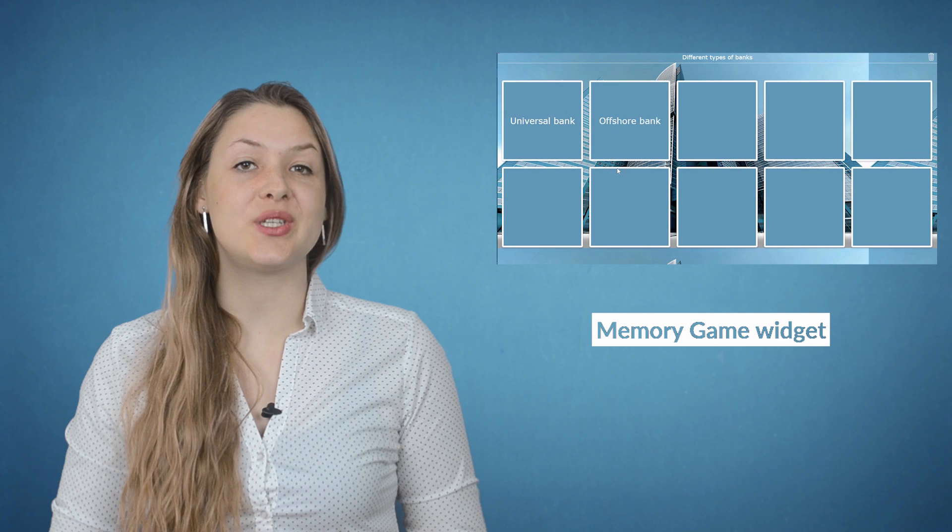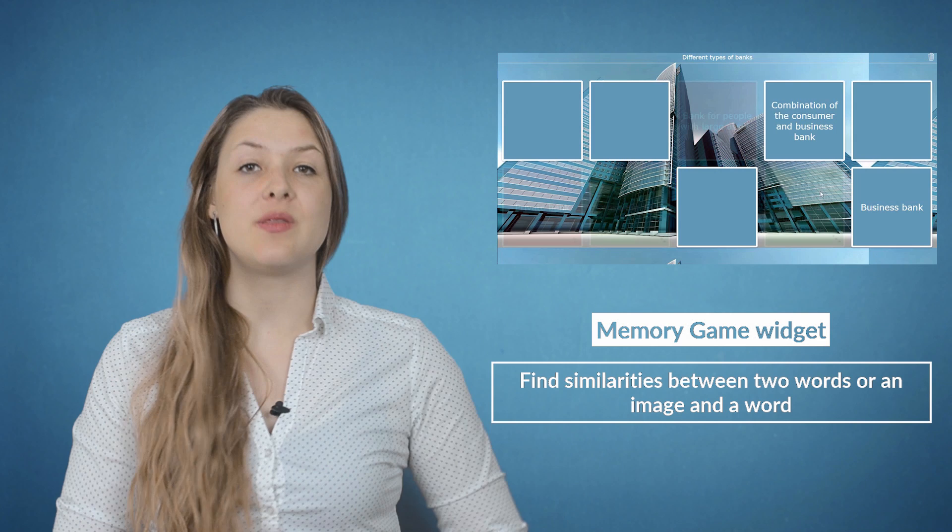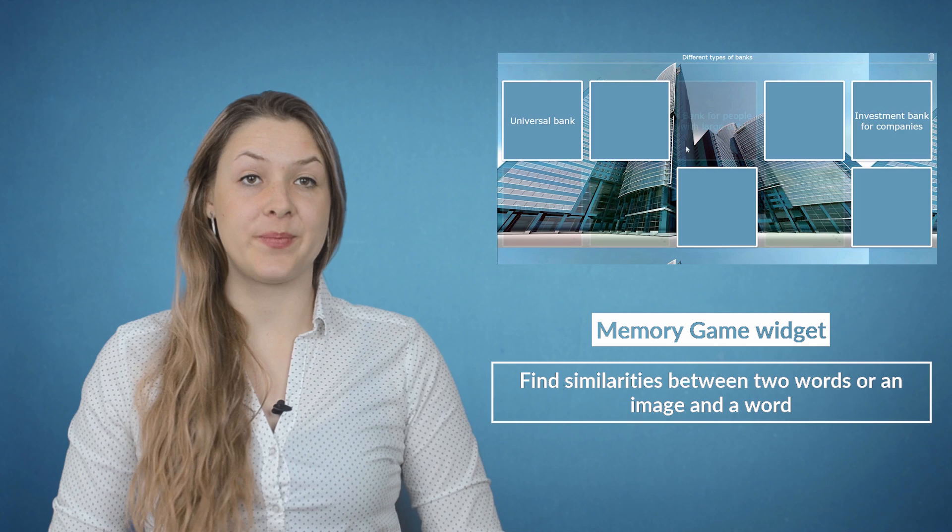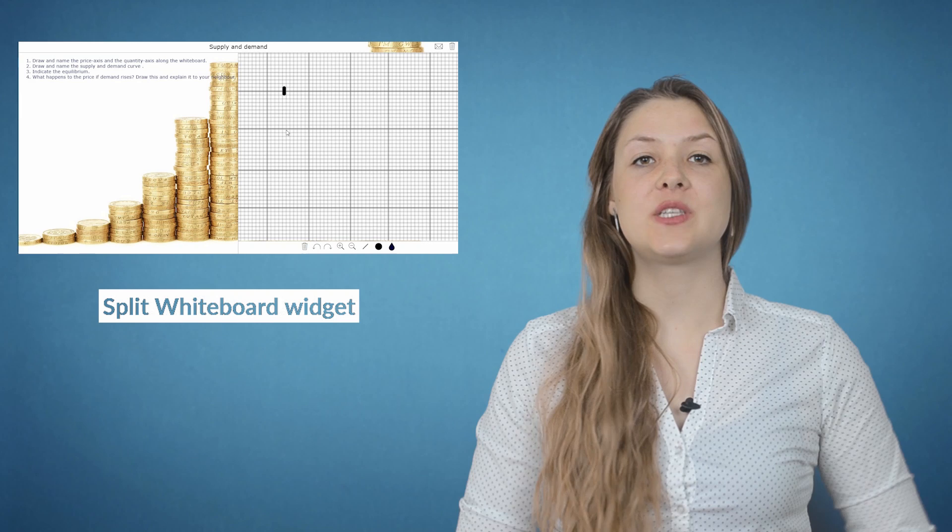Another way for teaching students new stuff in a different interactive way is by using the Memory Game widget. Let them find the similarities between two words or between an image and a word. In this widget, students have to combine the description of a financial bank with the name of it. This is an interactive and fun way for students to learn new things or to retrieve knowledge. To make it more difficult, just add some more pairs.